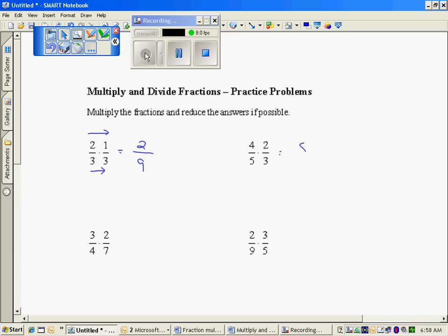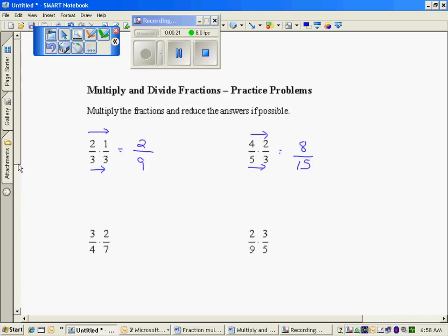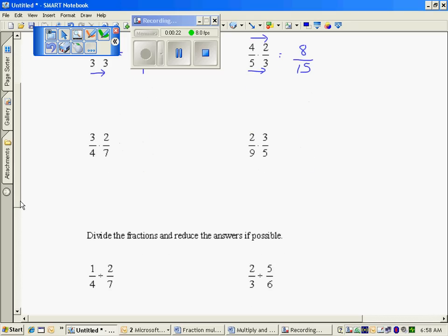Again, multiplying numerators, four times two, denominators, five times three. Multiplying numerators, six, denominators, twenty-eight, realizing I can reduce by a factor of two, would be three fourteenths.